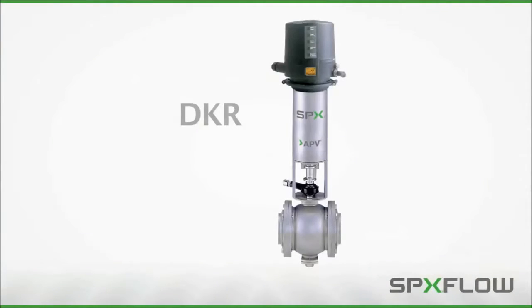The DKR, shown with sanitary clamps in this video, can be provided with many different connection types depending on installation requirements. It should be noted that welding the cover flanges directly into the process line is typically the most common and most sanitary connection method.